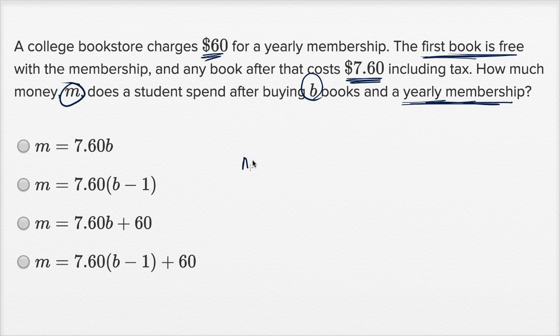So M, the amount of money they're going to spend, is going to be the yearly membership, which is $60—we're going to do everything in dollars—$60 plus the amount they spend on books. So they're going to buy B books, and it's $7.60 per book.